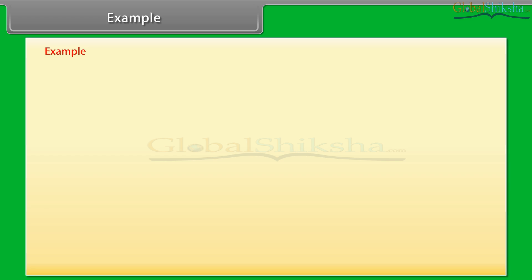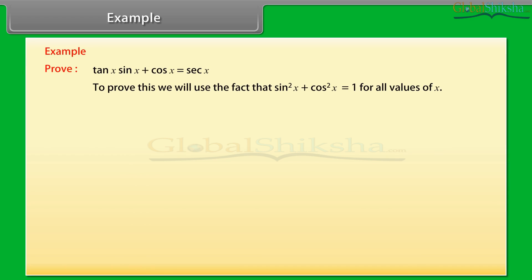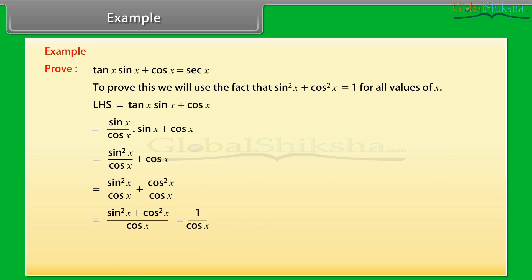Example 1: Let's now solve an example related to trigonometric identities. Prove that tan x · sin x + cos x is equal to sec x. To prove this, we will use the fact that sin square x plus cos square x is equal to 1 for all values of x. On solving the left-hand side, which is tan x · sin x + cos x, we get sec x, which is equal to RHS. Hence, tan x · sin x + cos x is equal to sec x.